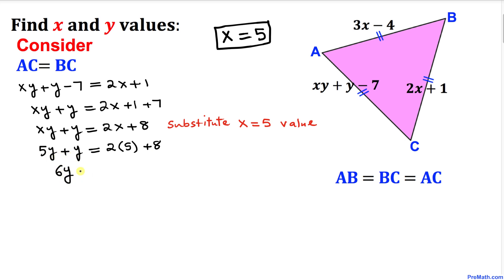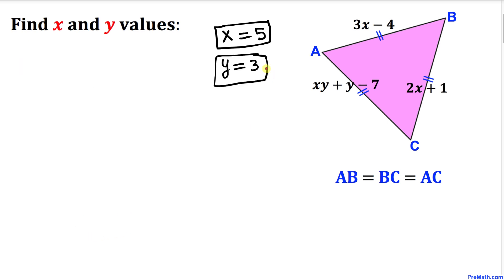6y equals 10 plus 8, so 6y turns out to be 18. Let's divide both sides by 6, so y turns out to be simply 3.